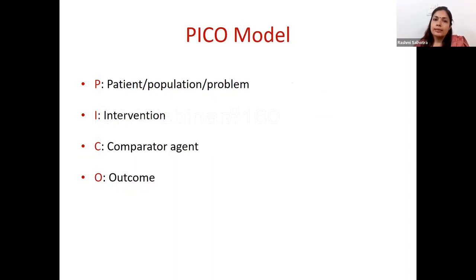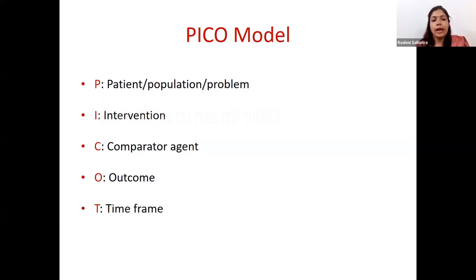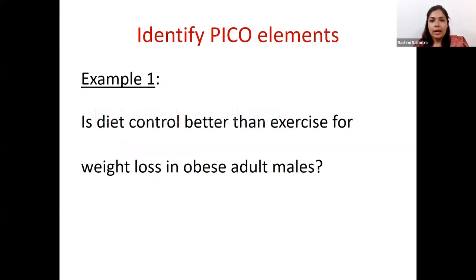Another way to examine whether a question is good is the PICO model, another acronym: P stands for Patient, Population, or Problem; I is for Intervention; C is for Comparator agent; and O is for Outcome. These are the four basic aspects that should be in your research question. Additionally, you can have T for time frame, or S for study design, making it a PICOTS model. Let us use the chat box to identify PICO elements: is diet control better than exercise for weight loss in obese adult males? Population: obese adult males; Intervention: diet control; Comparator: exercise; Outcome: weight loss.